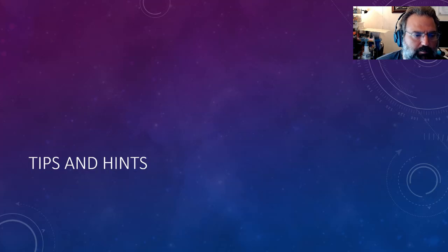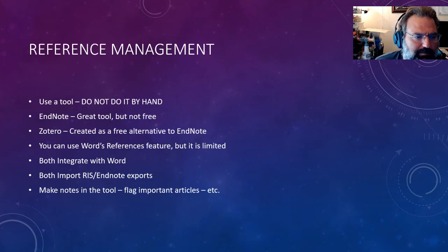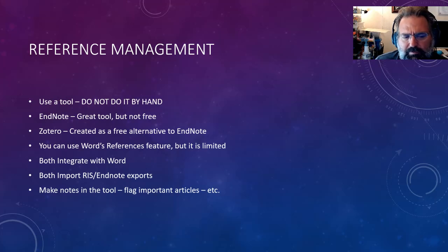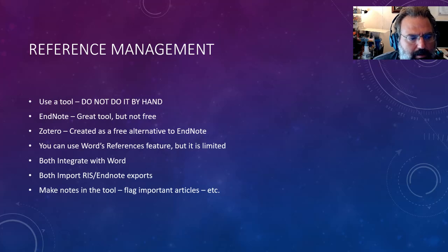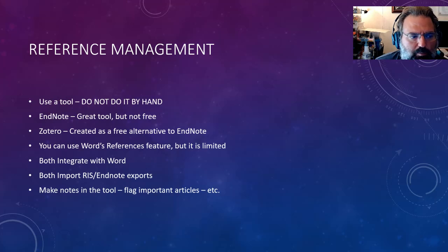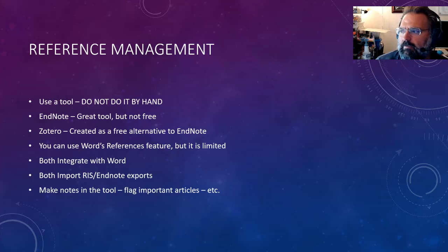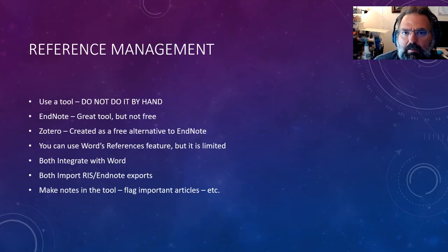Some paragraph resources worth considering: Duke's Writing Lab is pretty good, as is Walden's. For reference management, generally speaking you don't want to do it by hand. You may want to use Endnote — it's a great tool but it's not free. Zotero is a free alternative created out of George Mason University. You can also use Word's reference feature, but it's pretty limited and may not have been adapted to APA 7th yet. Both Zotero and Endnote integrate into Word, import RIS or Endnote files, and allow you to make notes, flag articles, and rate articles — definitely something worth looking into, especially if you pursue work involving a lot of research and writing.